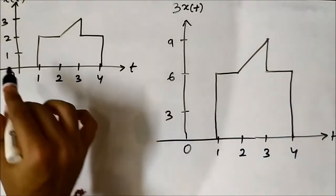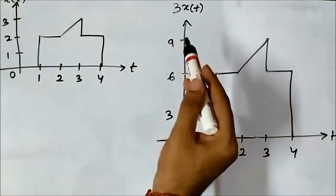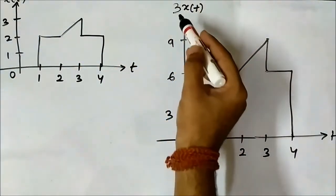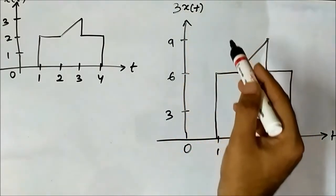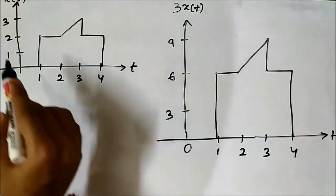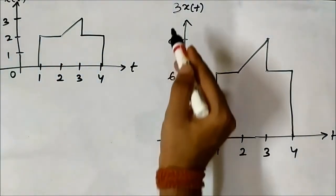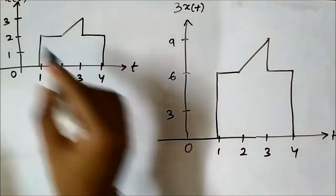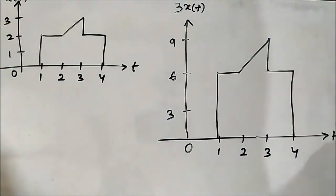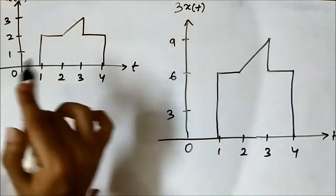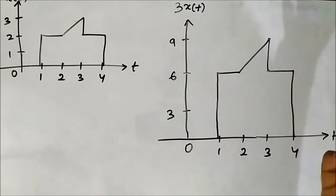So you only have to identify the amplitudes and multiply them with the scaling factor. Here the scaling factor is 3, which is greater than 1, so this is amplification. Just identify the amplitude points in the reference signal and multiply by the scaling factor: 1, 2, 3 become 3, 6, 9. We follow the same pattern — the pattern is the same in both cases, only the amplitudes are scaled up or down.